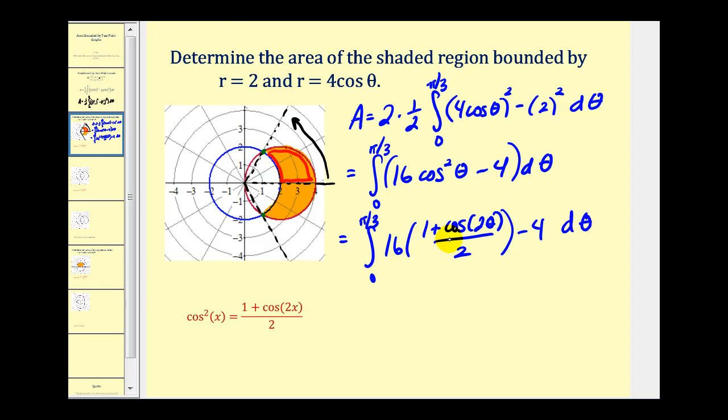Two and the 16 simplify. So we have, this will be eight plus eight cosine two theta and then minus four. So we can combine the eight and the minus four. We'll have four plus eight cosine two theta. Let's go ahead and continue this on the next slide.